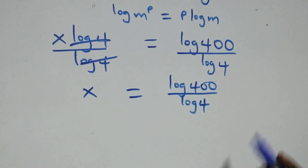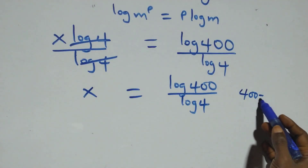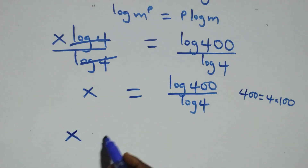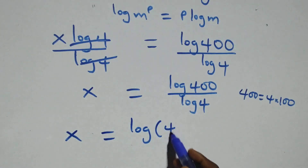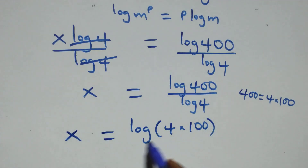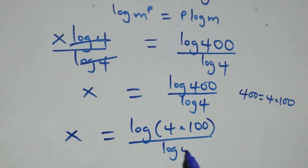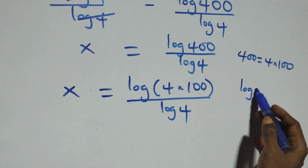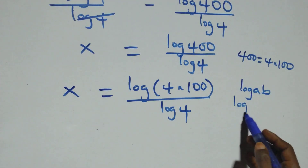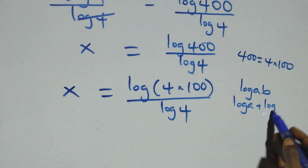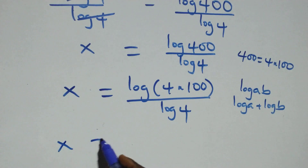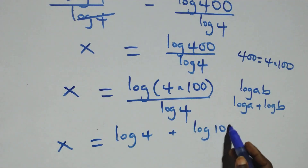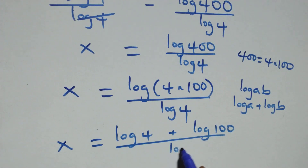From here we can express 400 as 4 times 100. So x equals log of 4 times 100 over log 4. This follows the logarithm rule: log of a times b is the same as log a plus log b. So x equals log 4 plus log 100, all over log 4.